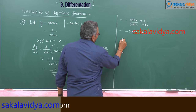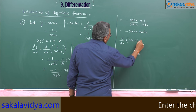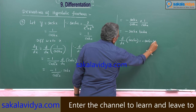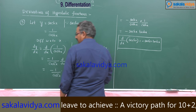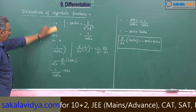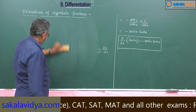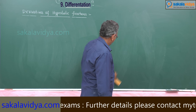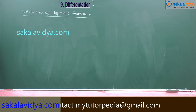So, therefore, d by dx of secant hx is equal to minus secant hx tan hx. Next we will look at cosecant hx.